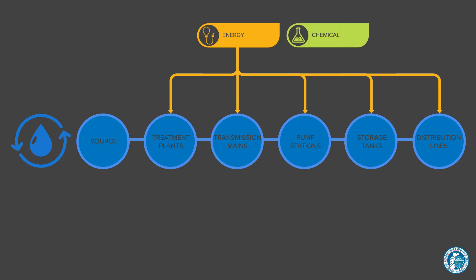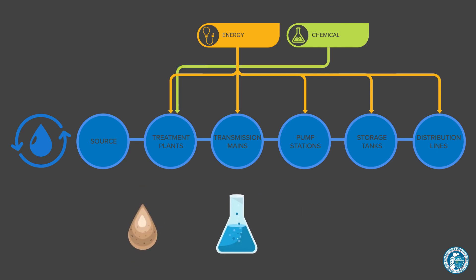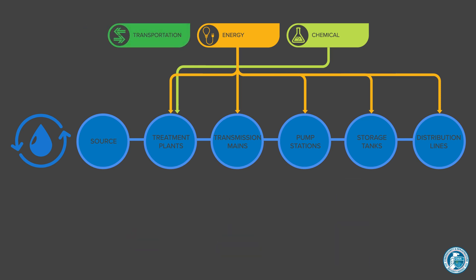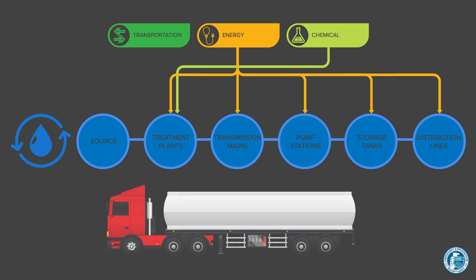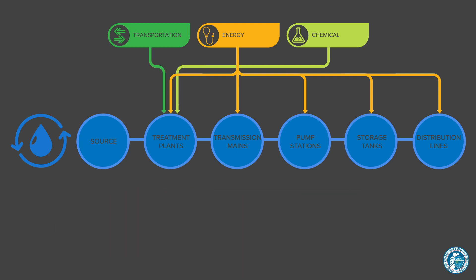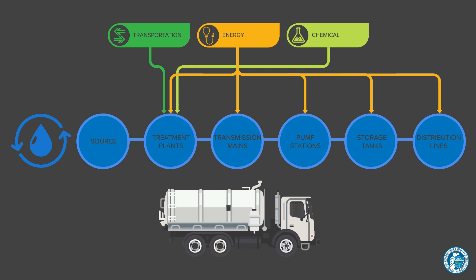Water systems rely on the chemical infrastructure sector to supply treatment and disinfection chemicals necessary for producing clean drinking water. Road and pipeline transportation systems are essential for delivery of fuel and chemicals to water treatment plants and disposal of solid waste generated during the treatment process.